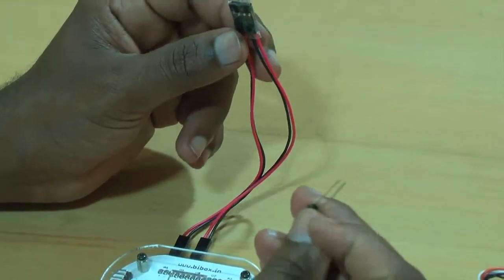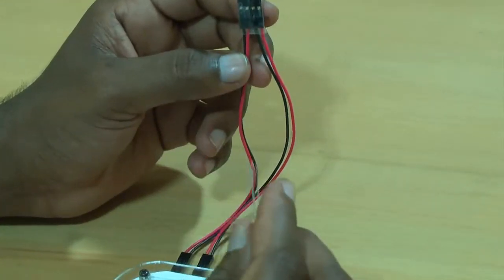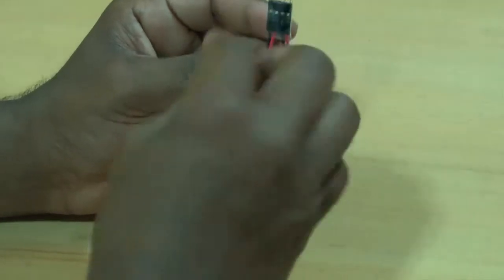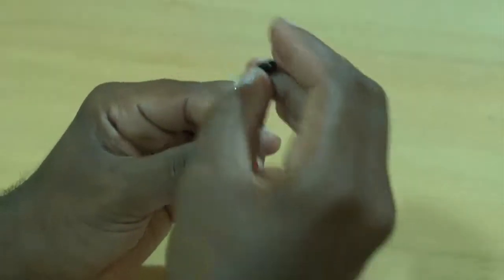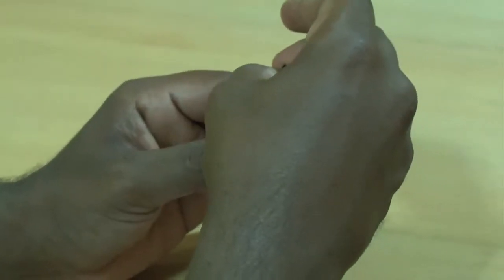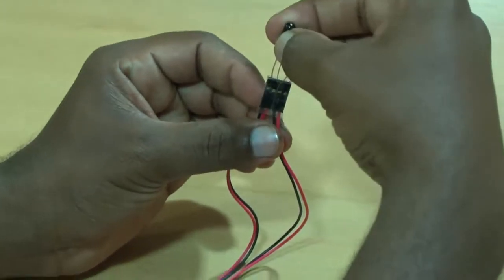That is, the smaller leg, negative, should go to positive of A1. The bigger leg, negative, should go to negative of A1. So here positive is red and negative is black. So let me connect bigger leg to black, and smaller leg to red.